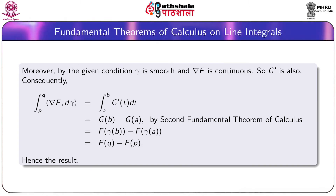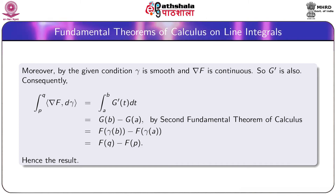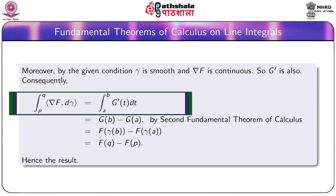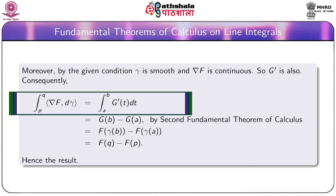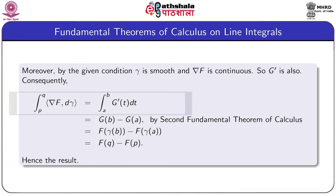Moreover, since gamma is smooth and grad F is continuous, G-dash is also continuous. Consequently, the line integral from P to Q of grad F d-gamma equals the integral from a to b of G-dash(t) dt. Applying the second fundamental theorem of calculus, its value is G(b) minus G(a), which equals F(gamma(b)) minus F(gamma(a)), that is F(Q) minus F(P). Hence the result.